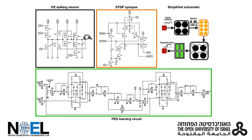To support long-term potentiation and depression, we designed an analog implementation of STDP synapses. The synapse is introduced with two spike sources — the pre- and the post-OZ neurons — and implements a memory with a decaying factor.